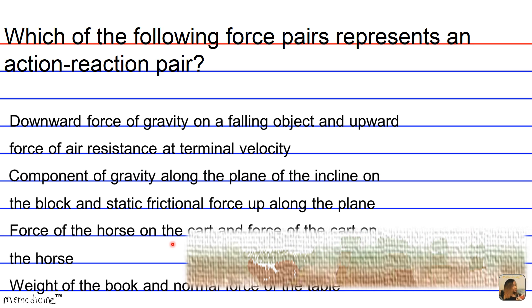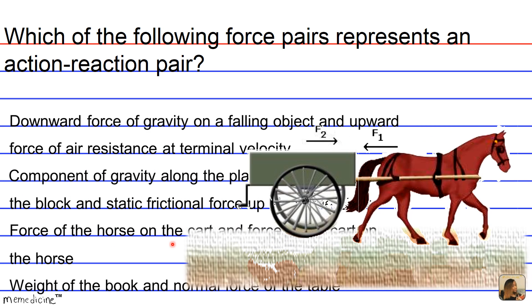That leaves answer choice C. The force of the horse on the cart and the force of the cart on the horse. Well, this action-reaction pair, they're both two types of contact forces and one is acting on the other. They're not both acting on the same object. So these force vectors show that one is acting on the other. Therefore, they're both acting on different objects. And this is the only example of an action-reaction pair. Although a lot of people would argue for the book, this is misleading in physics because it's not an action-reaction pair. So the horse and cart example are the action-reaction pair.